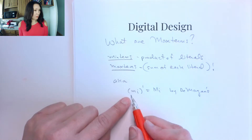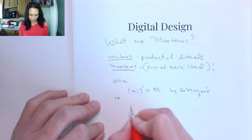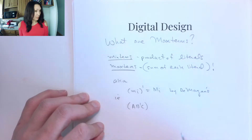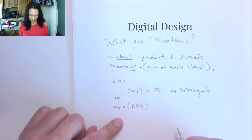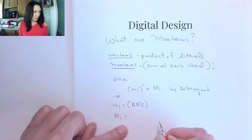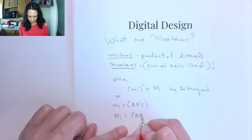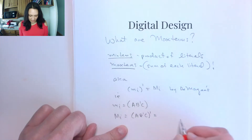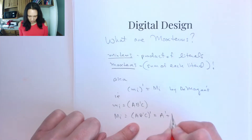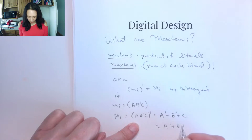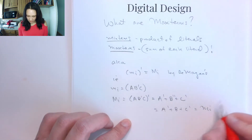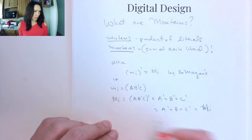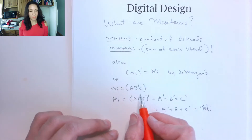The min terms look something like a, b', c. If this is the min term, then the max term corresponding to it is this min term complemented, and we apply DeMorgan's on it. This gives us a' or b'' or c', which is a' or b or c'. This would be the max term — capital M — corresponding to the lowercase m min term.